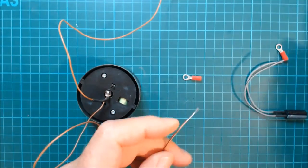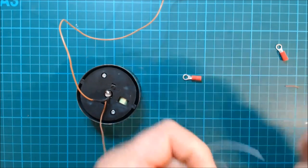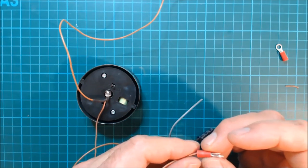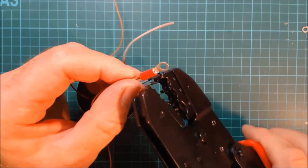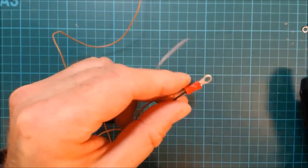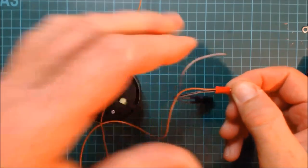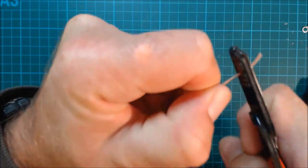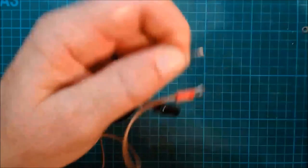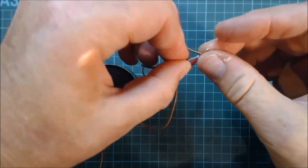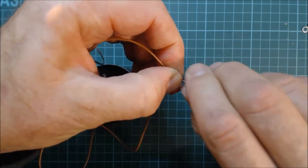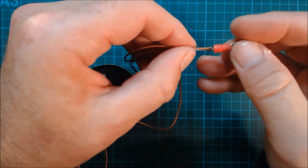So strip both wires. Twist them together and crimp on a ring terminal.